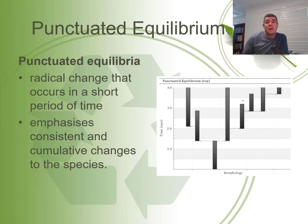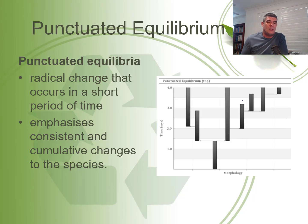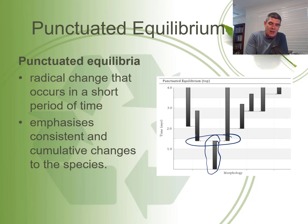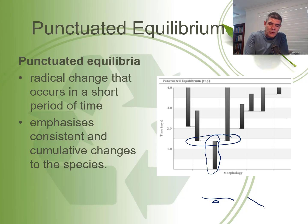The ideas of Gould and Eldredge are a little bit different. When you look at the phylogenetic trees or cladograms they build, you can see long periods of stasis — no change — and then some sort of rapid change. That's the idea of punctuated equilibria. Equilibria is stability; think about a seesaw sitting balanced on a point. That's an example of equilibrium. And then something happens to push the seesaw out of balance — something changes.